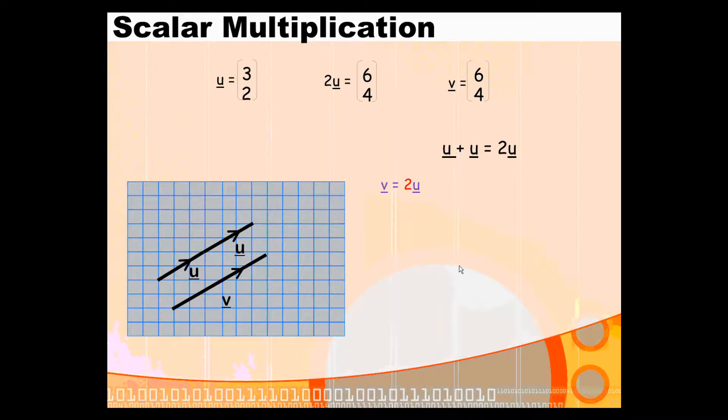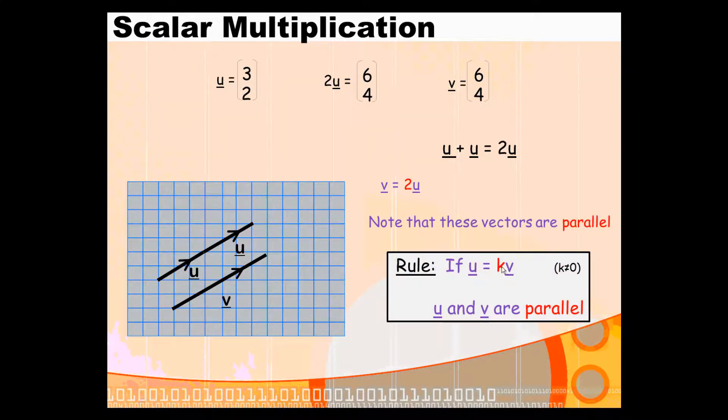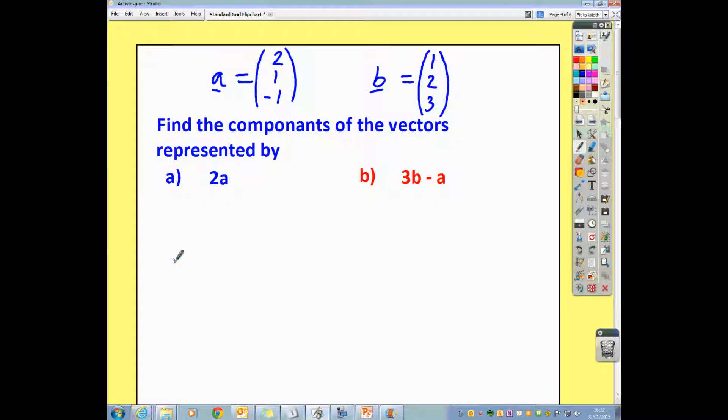Now, if you want to prove that two vectors are parallel, what you want to do is show that there's a scalar connection. In other words, that there's a number that you can multiply one of the vectors by to get you to the other one. Now, that may be something larger than 1, maybe something less than 1. It may be positive, it may be negative. But as long as there's a scalar connection between your two vectors, that is proof that they are both parallel. Let's have a look and see if we can do a couple of examples.